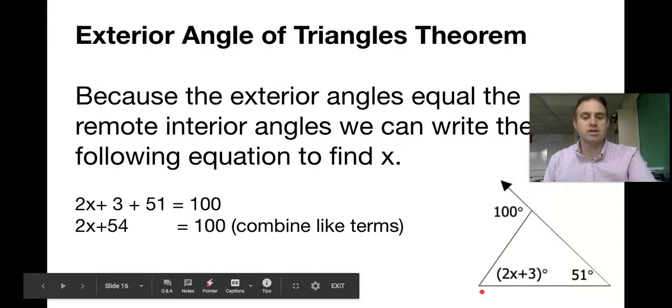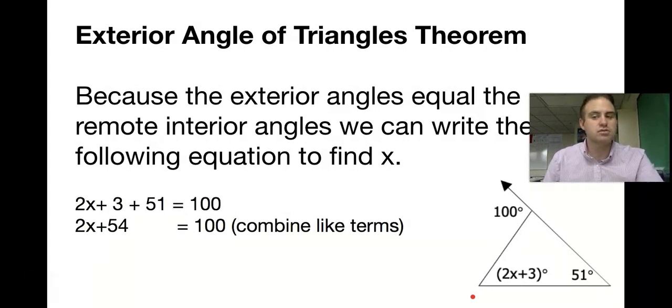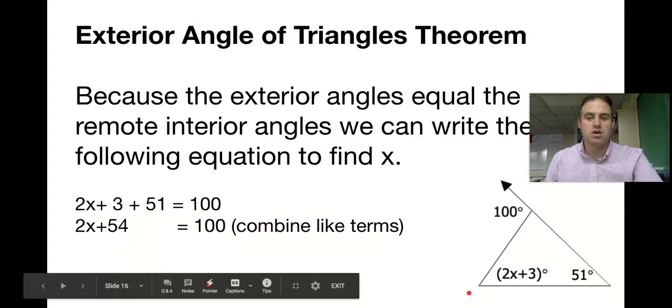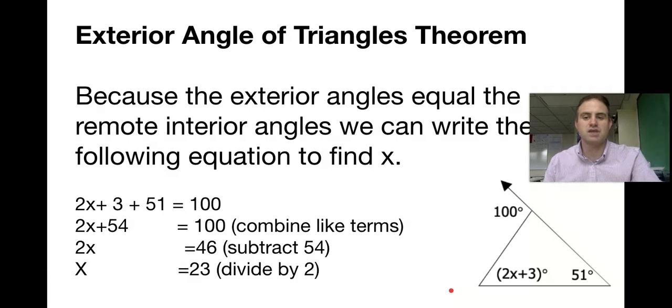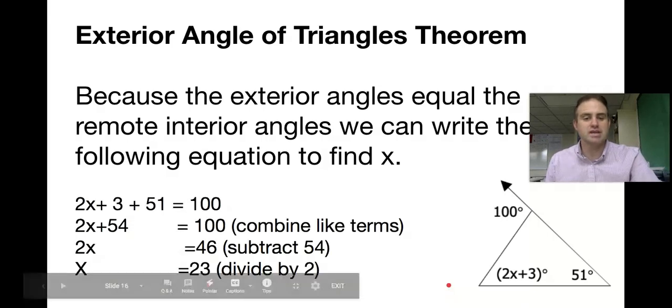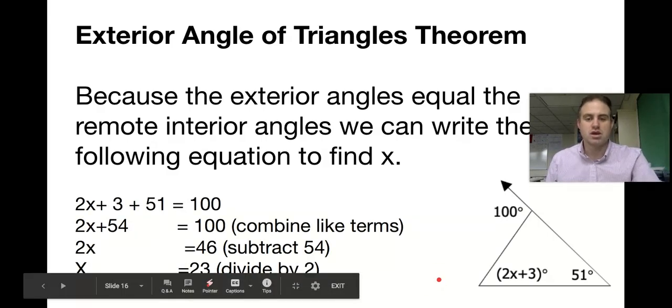We can solve this equation to find x. Combine like terms, 3 and 51, to get 2x + 54 = 100. Then 2x = 46 by subtraction. Divide both sides by 2 to get x = 23. If x is 23, we can plug in for x and find that this angle is 49.